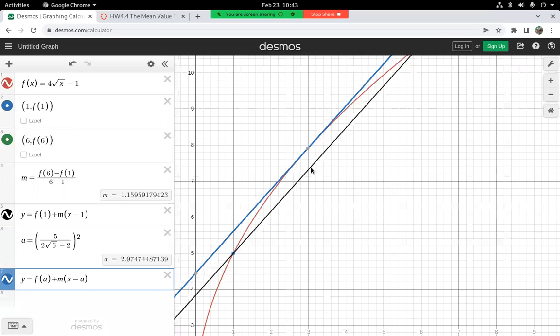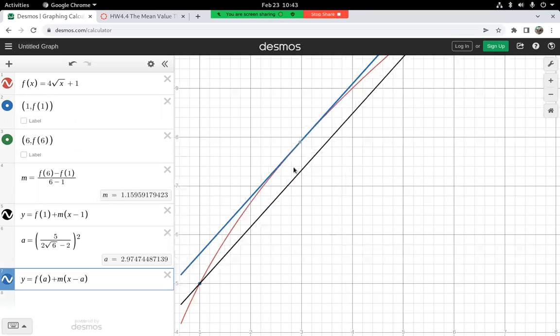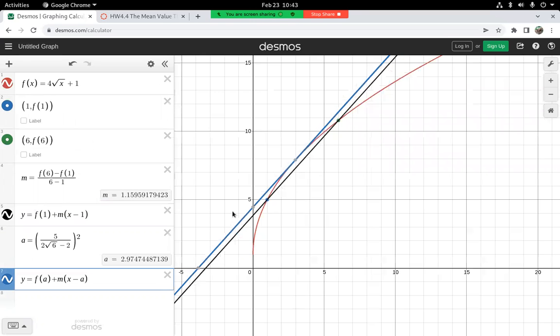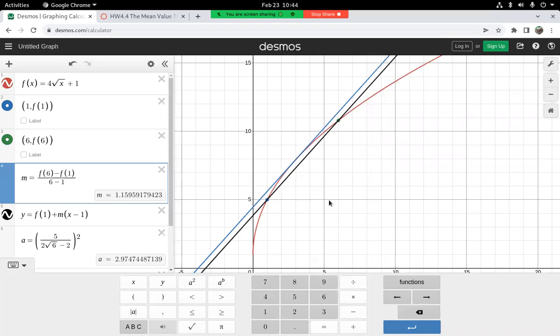And what I should see is that should look like a tangent line at that point right there. And let's just zoom in. Yeah, that looks like a tangent line. Blue tangent on red curve. And when I zoom back out, it appears that the blue and the black line are parallel. And they ought to be because I'm using the same slope m here.